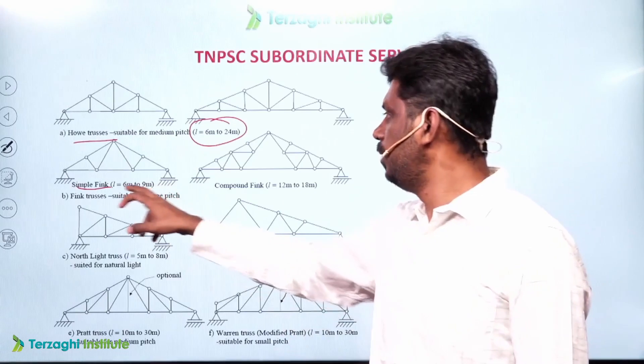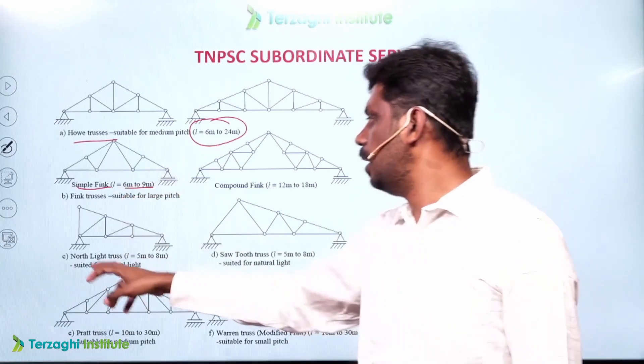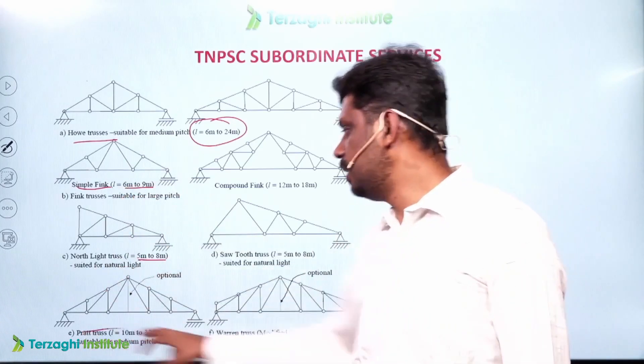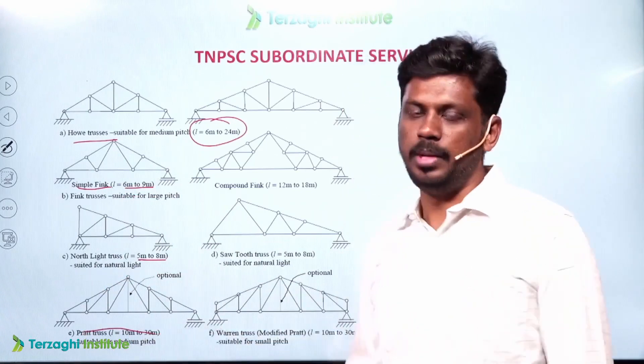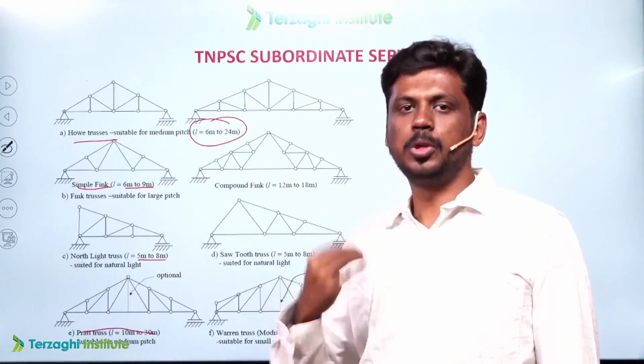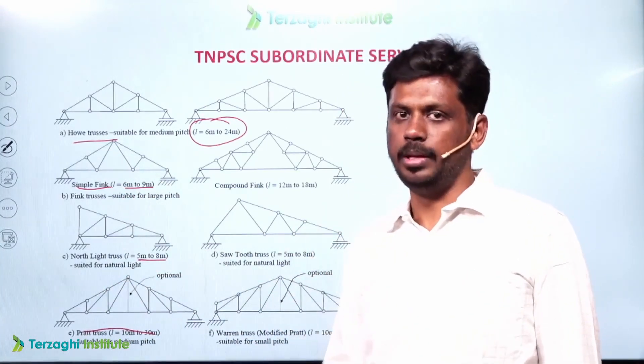Simple truss spans from 6 m to 9 m. North light truss spans from 5 m to 8 m. Pratt truss spans from 10 m to 30 m. King post truss is used for spans less than 12 m.